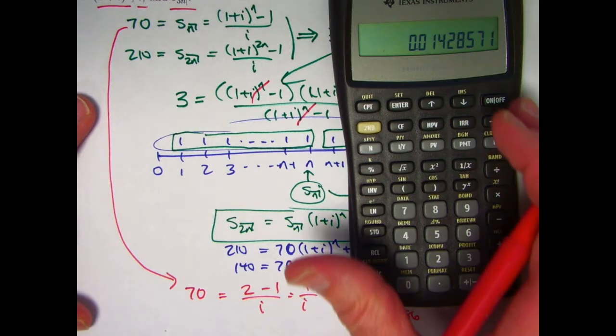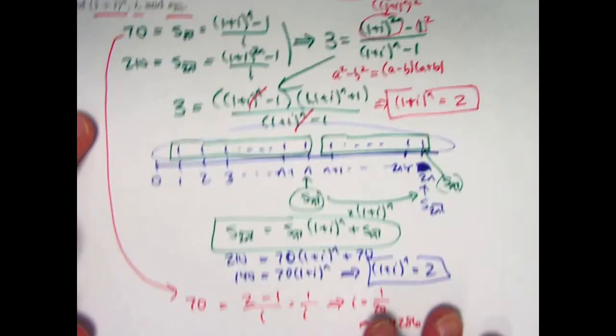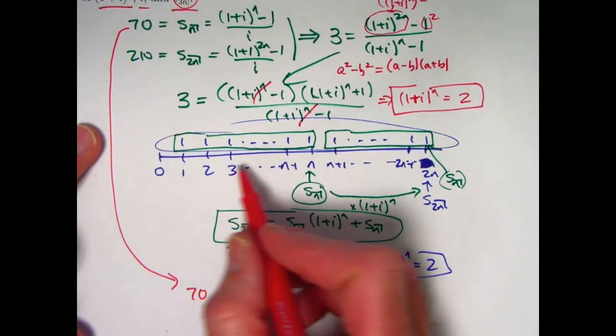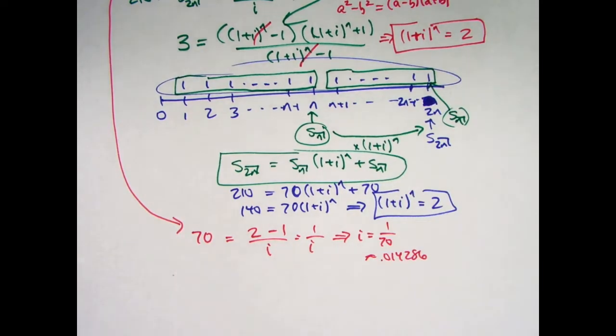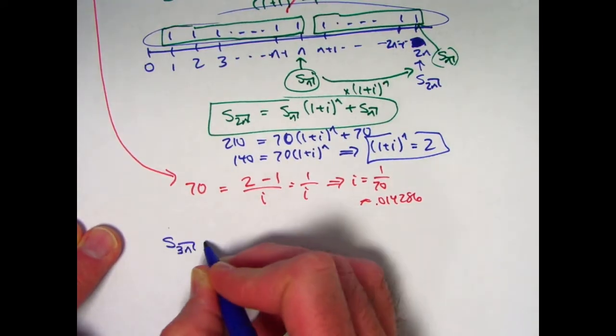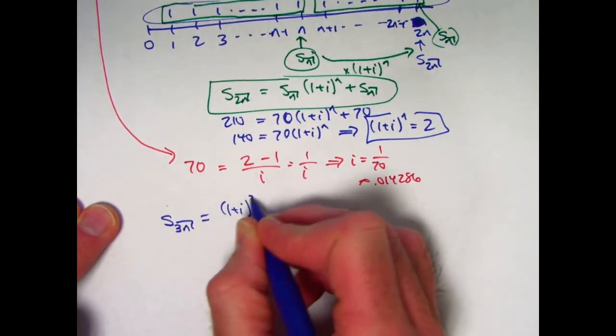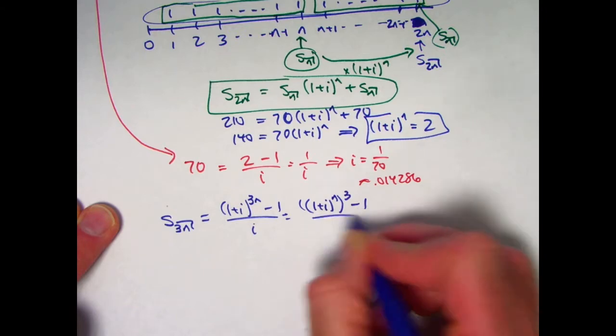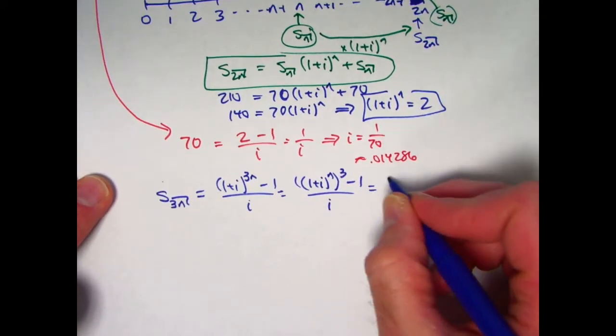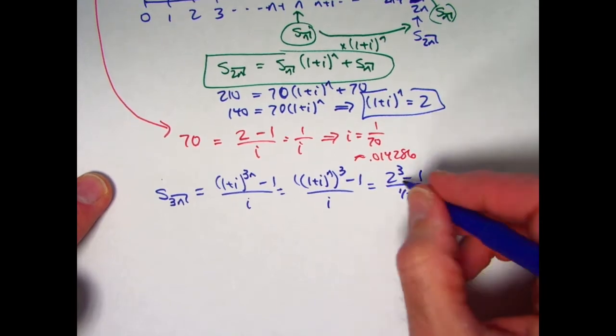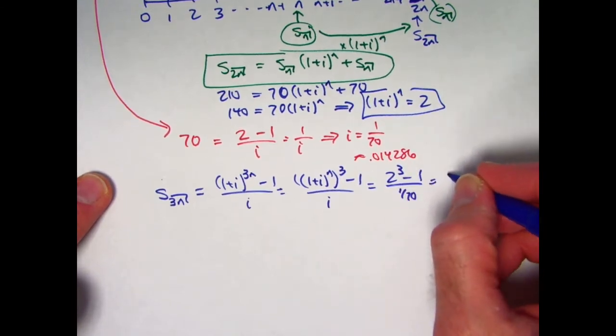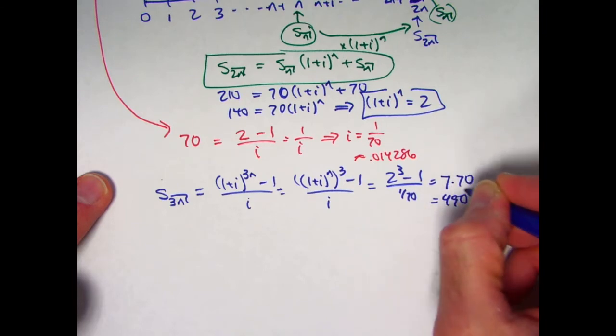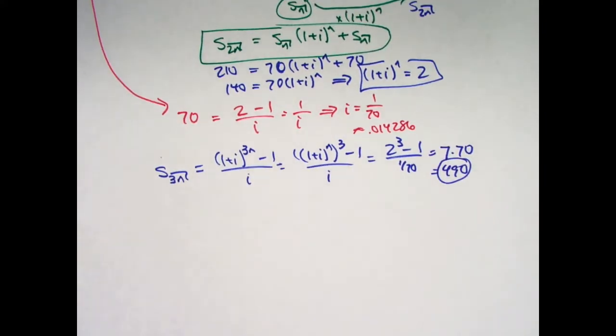Finally, now we find s_3n. Let me use the formula for s_n. I could say s_3n is ((1+i)^3n - 1) / i, which is ((1+i)^n)^3 - 1) / i. Now I can use what I found: (2^3 - 1) / (1/70). 2 cubed is 8, 8 minus 1 is 7. I get 7 divided by 1/70, which is 7 times 70, which is 490. And that is the answer.